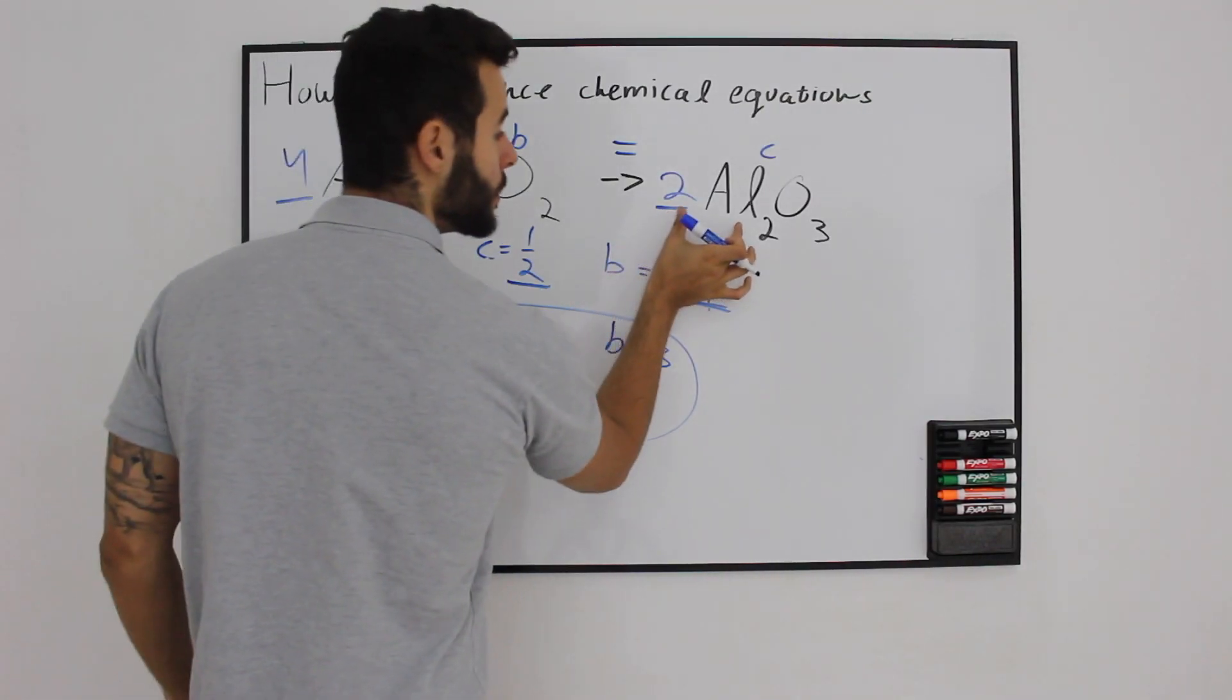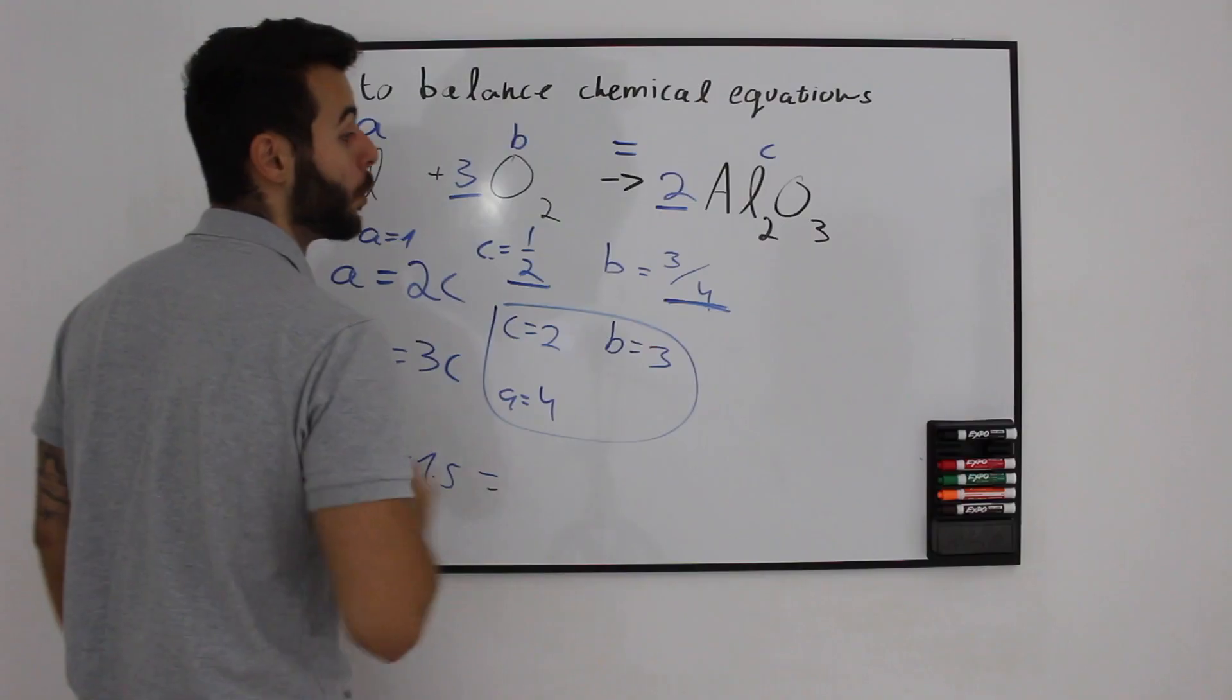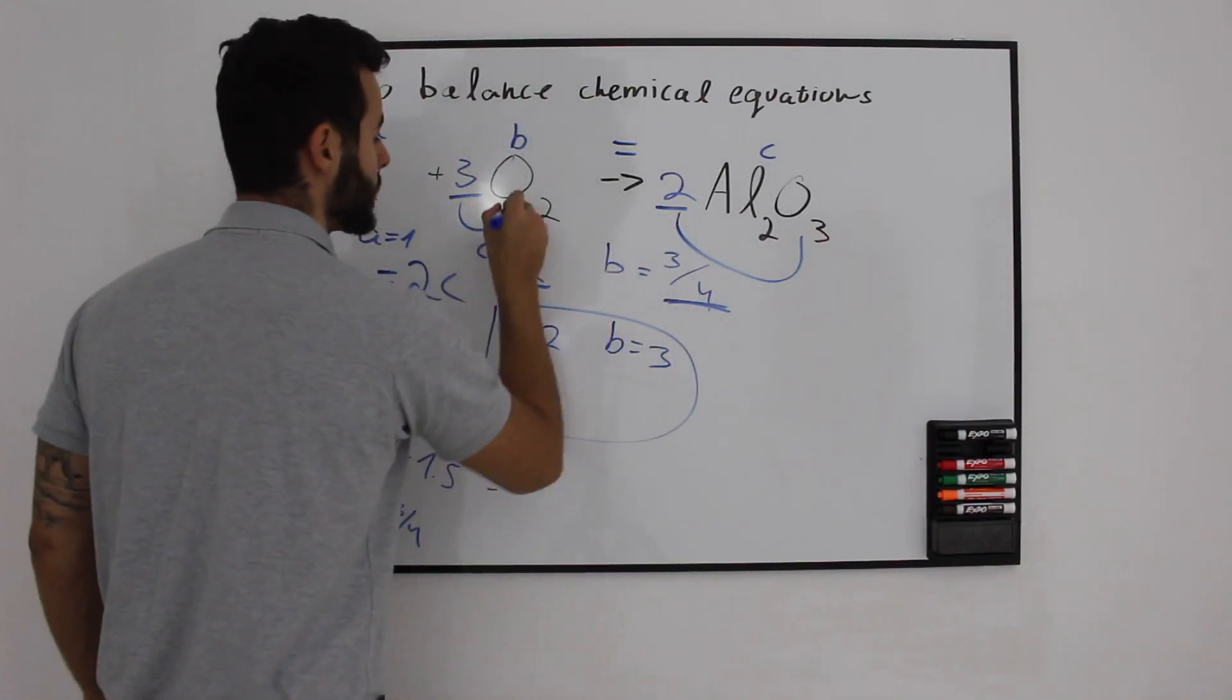So we have 4 aluminium, 4 aluminium, we have 6 here and 6 here.